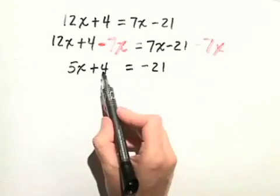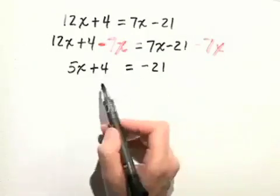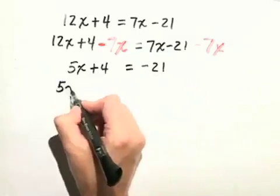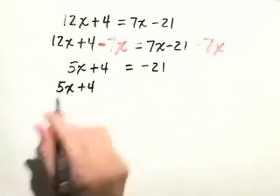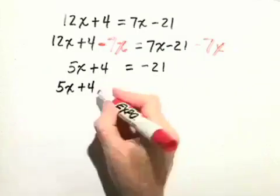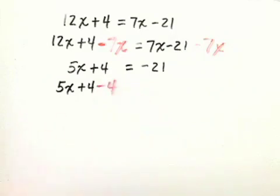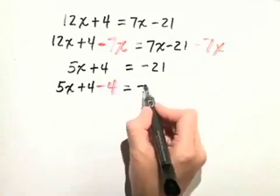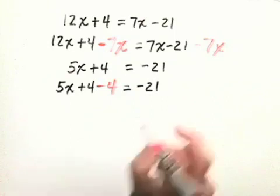Next, we'll move the constant term 4 to the right-hand side by subtracting 4 from both sides. 5x plus 4 minus 4 is equal to negative 21, again minus 4.